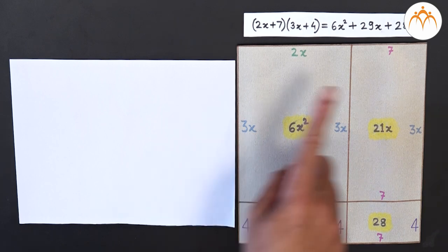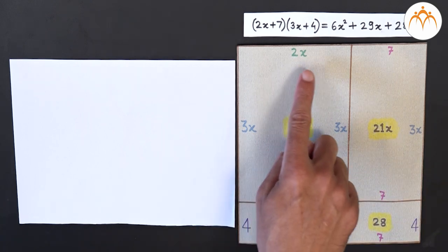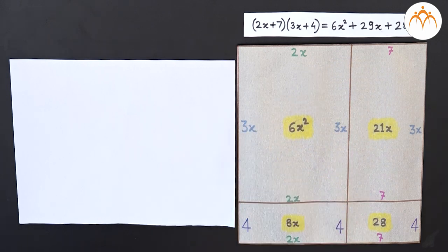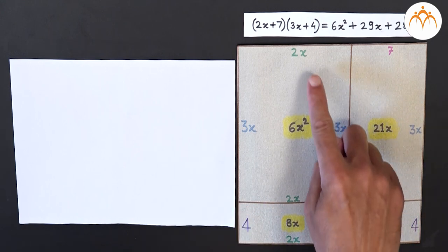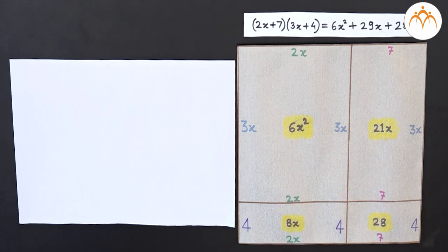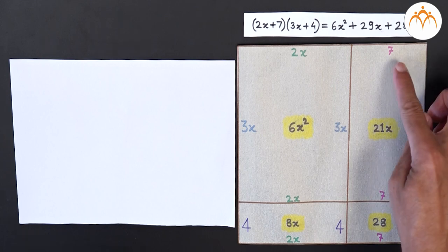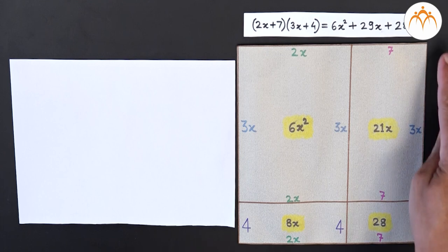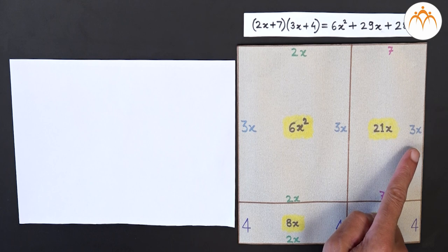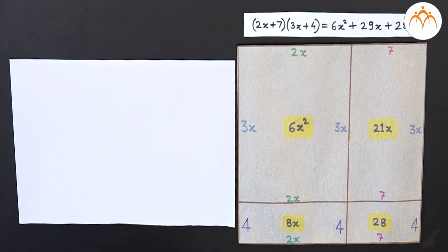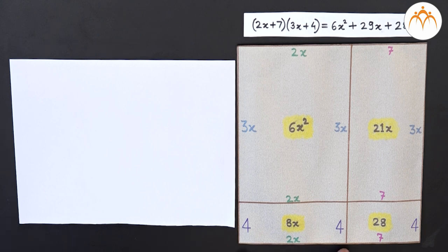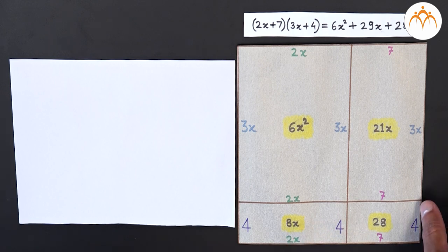Let us expand it by looking at the figure. This length is 2x and the adjacent side has length 3x, so the area of this rectangle is 2x × 3x = 6x². For the adjoining rectangle, one side is 7 and another has length 3x, so its area is 7 × 3x = 21x. For this rectangle the vertical length is 4 and the horizontal side has length 2x, so the area is 4 × 2x = 8x. For the last one, this rectangle has sides 4 and 7, so its area is 7 × 4 = 28.